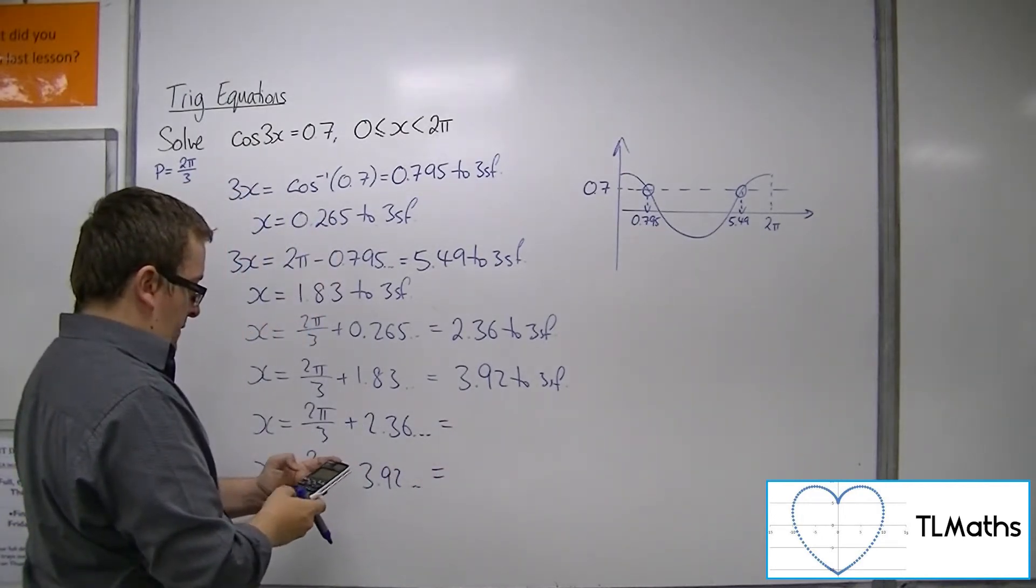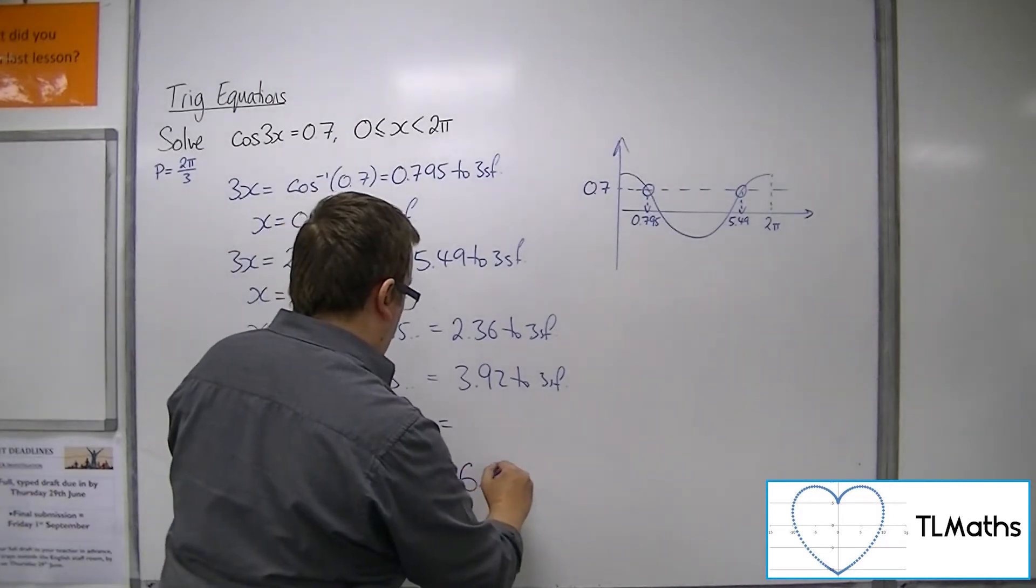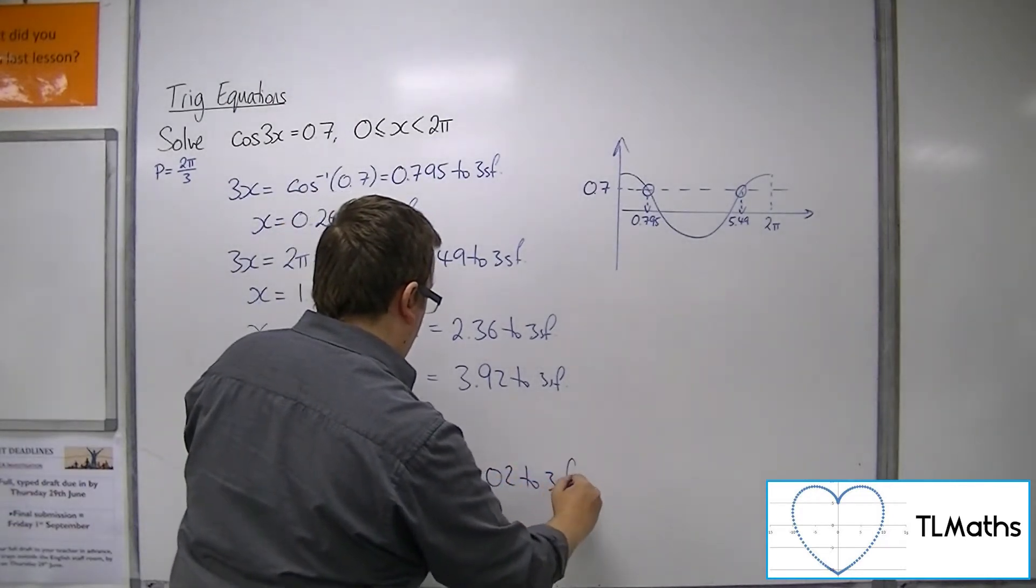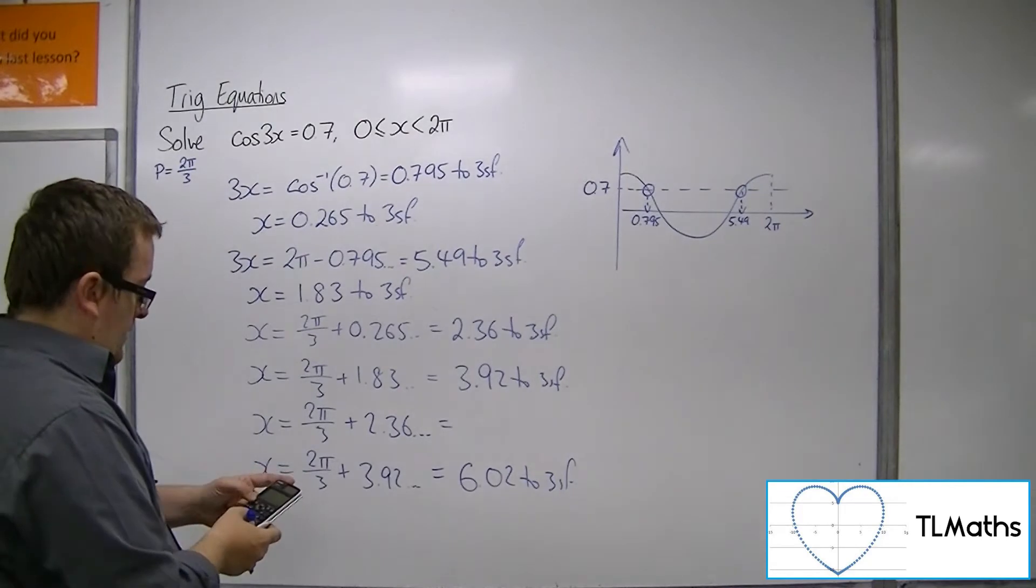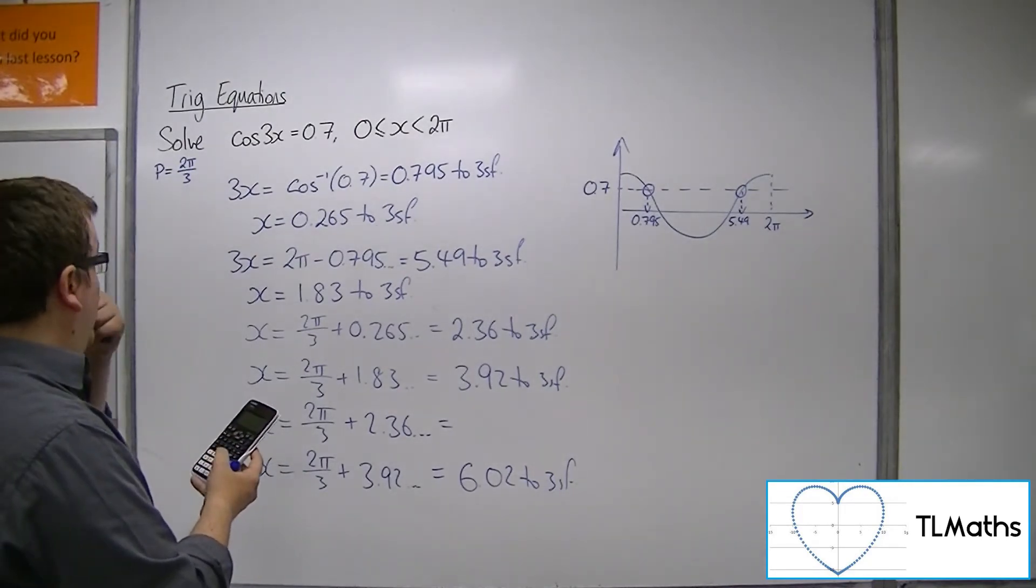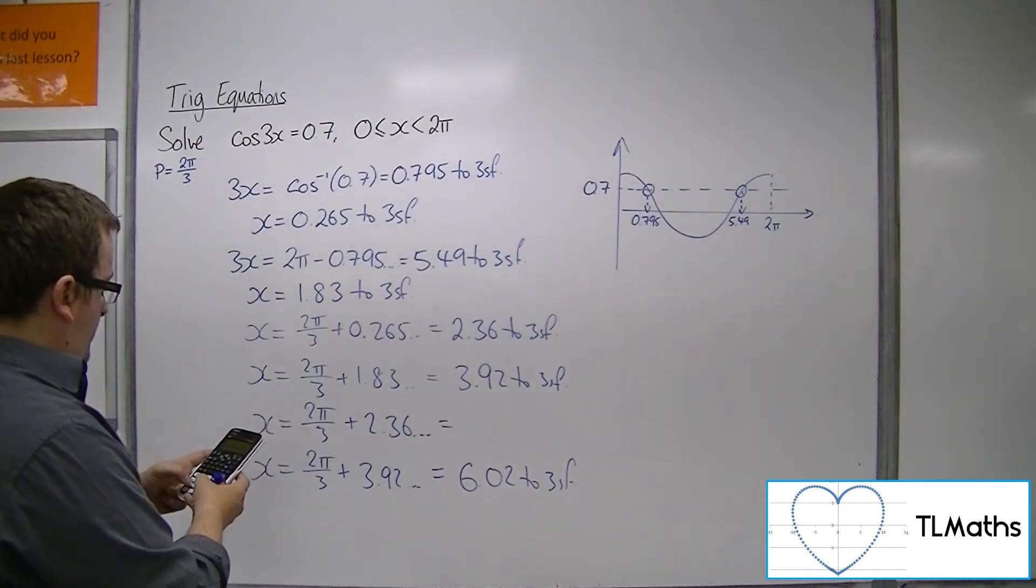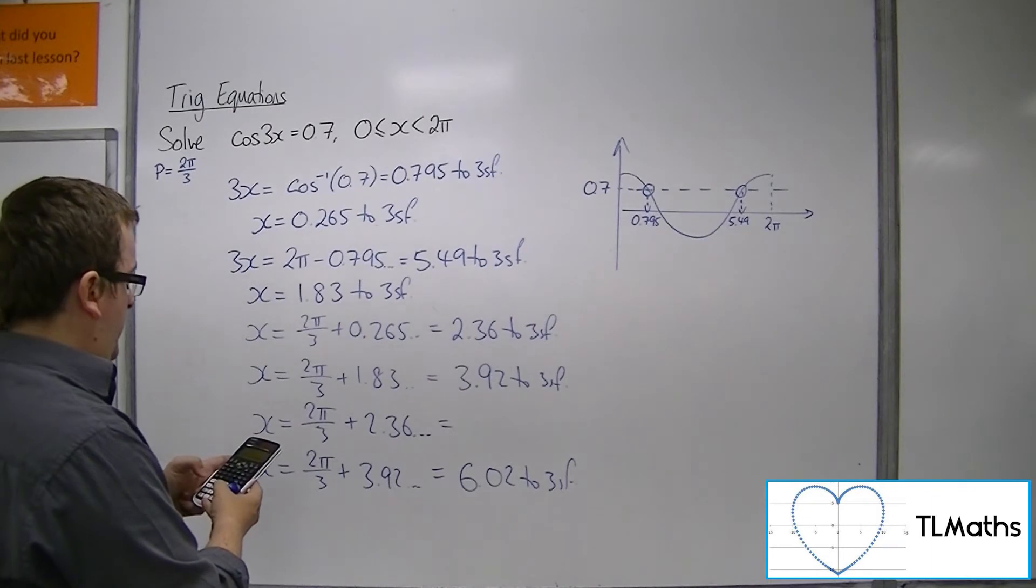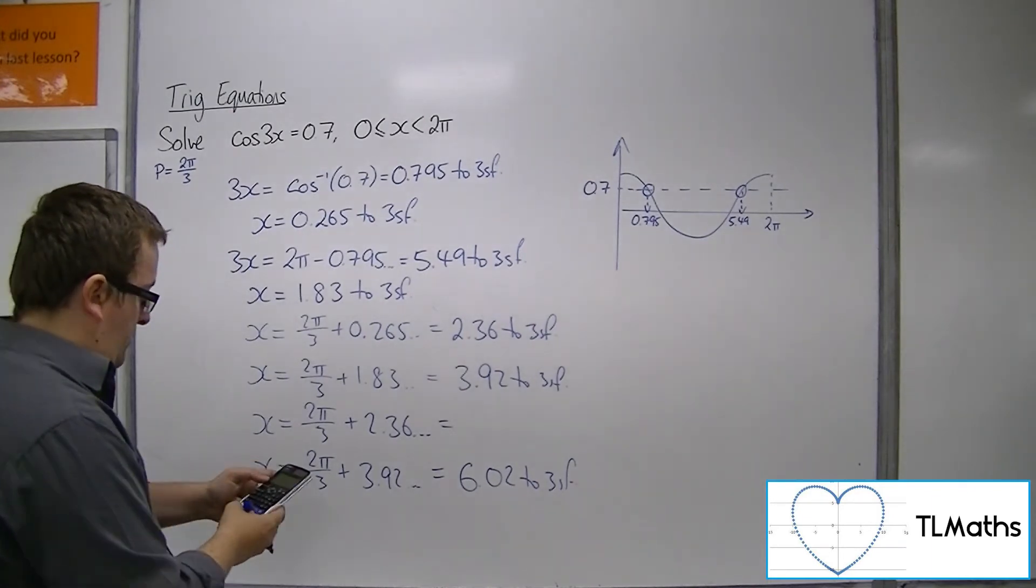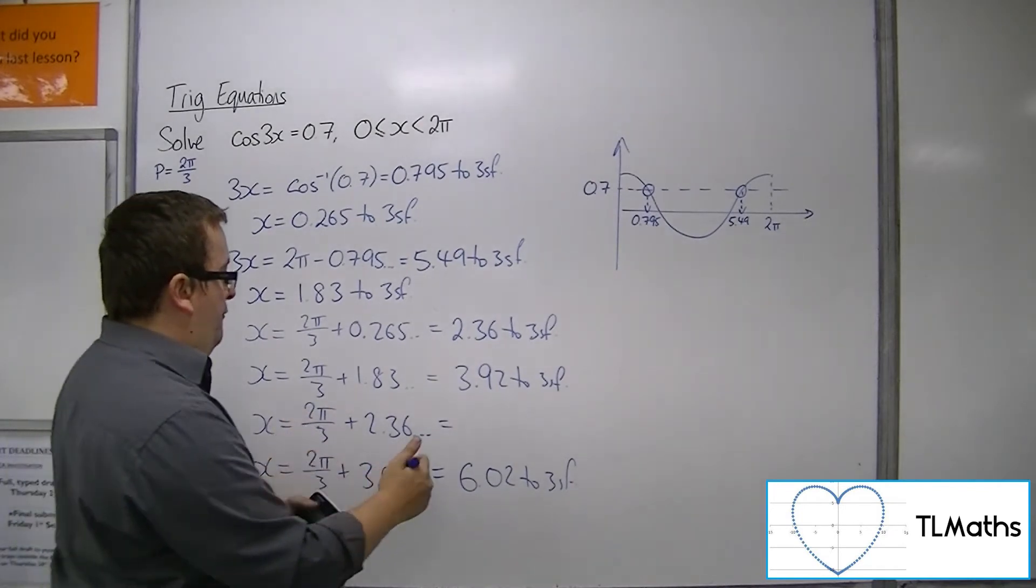So adding 2π/3 to 3.92 gets us 6.02. And for the other one, adding 2π/3 again to 2.36 gets us 4.45.